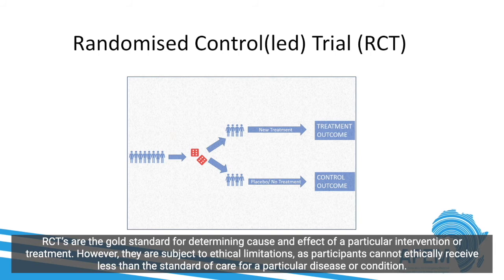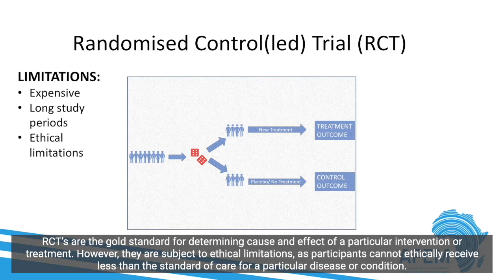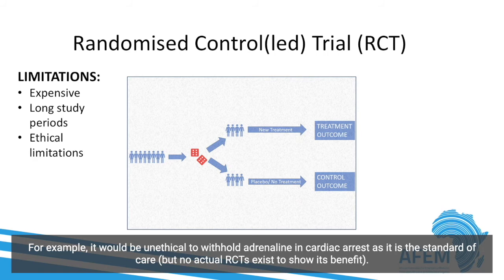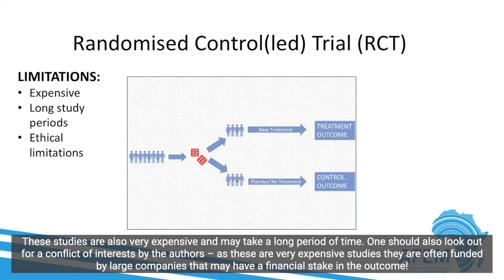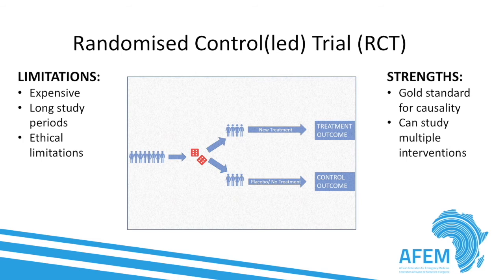RCTs undoubtedly have many strengths, but they also have limitations. RCTs are subject to ethical limitations, as participants cannot ethically receive less than the standard of care. For example, it would be unethical to withhold adrenaline in cardiac arrest as it is the standard of care, even though no actual RCTs exist to show its benefit. RCTs are also very expensive and may take a long period of time. One should also look out for conflicts of interest by the authors, as these expensive studies are often funded by large companies that may have a financial stake in the outcome and bias the results. Despite these limitations, RCTs remain the gold standard for determining cause and effect, and they can also assess multiple interventions at the same time.